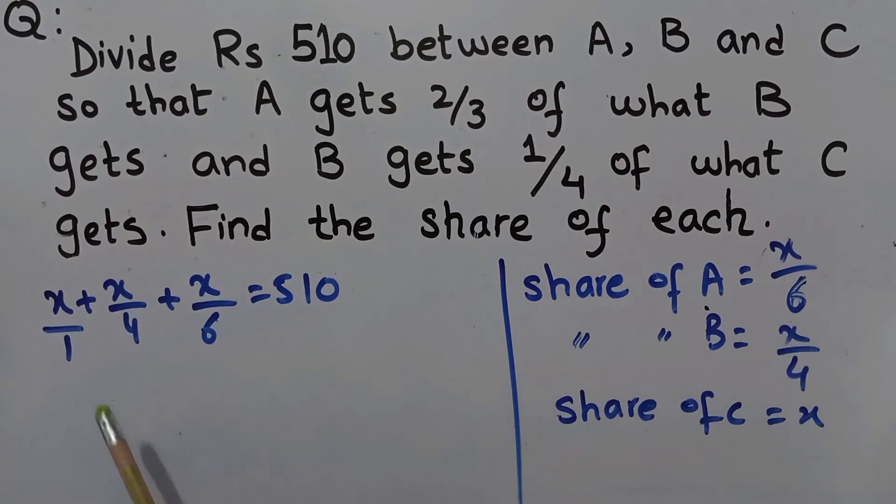Next, we will simplify the equation. We will take the LCM, which is 12. So we have 12X. 4 times 3 is 12, so we add 3X. 6 times 2 is 12, so we add 2X. This equals 510.